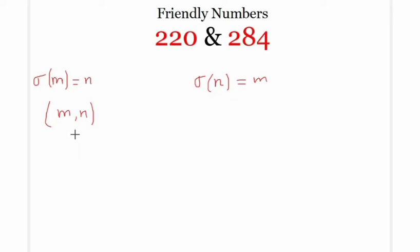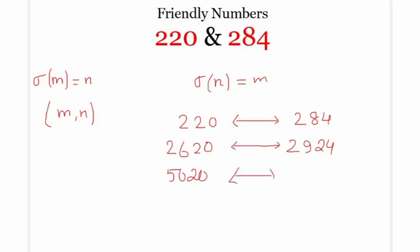Amicable numbers or amicable pair of numbers were known to Pythagoras. It is very well known to him. And 220 and 284 are the smallest such pair. A few more pairs are 2620 and 2924. Another pair is 5020 and 5564. So these are a few pairs of amicable numbers.